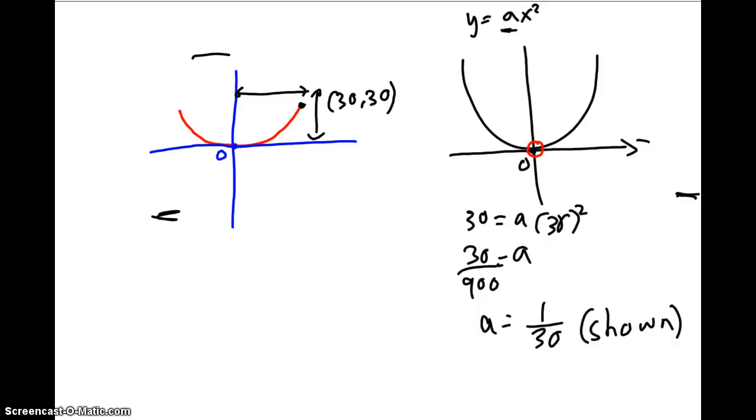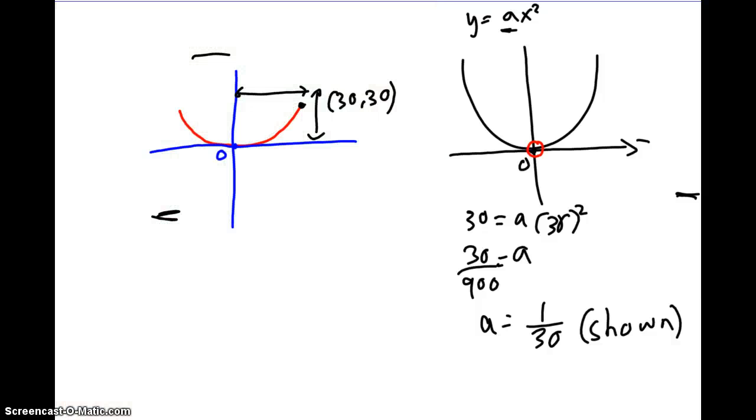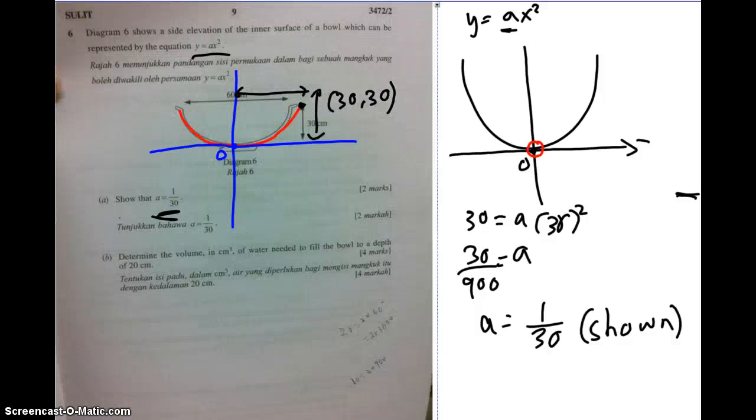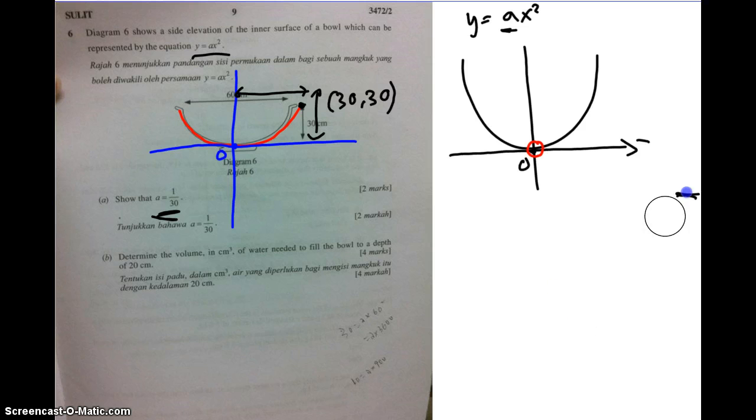So we go to part B. I think part B is just the integration topic. Because this one can only record for 15 minutes, so I need to be fast enough. I just erased part of it. So the second part asks you to find the volume.